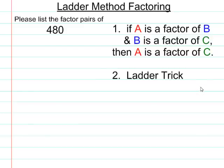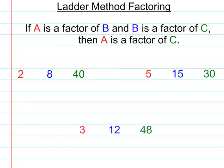I'll have to model it and it's based on a principle that we need to observe. So before we list the factor pairs of 480, let's take a look at this principle which allows us to do ladder method factoring. The principle is if A is a factor of B and B is a factor of C, then A is a factor of C. So let's see what that means.